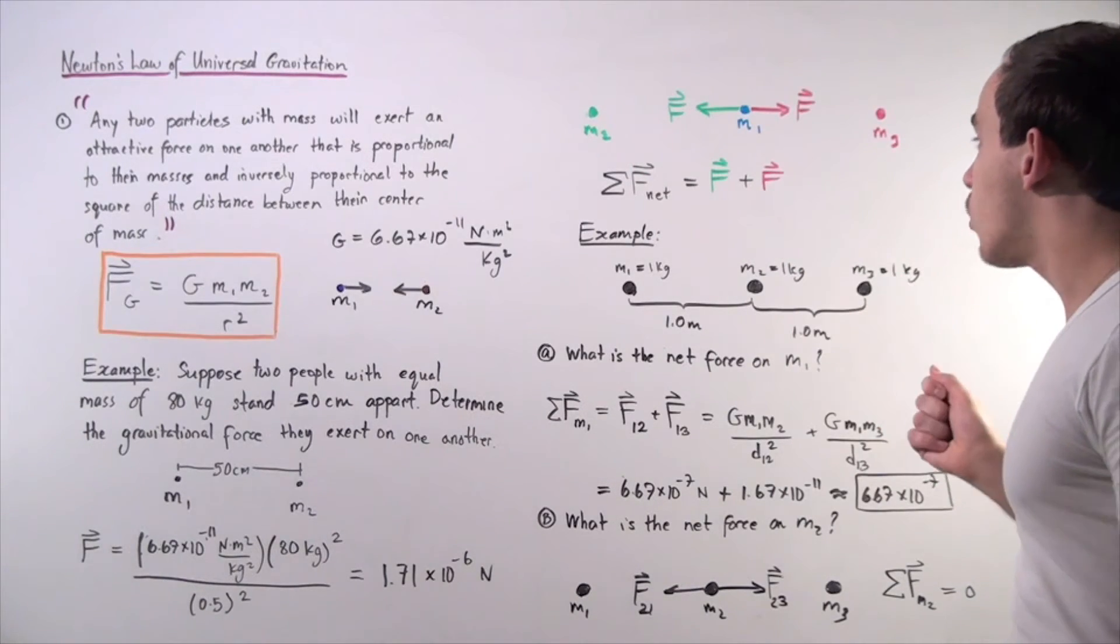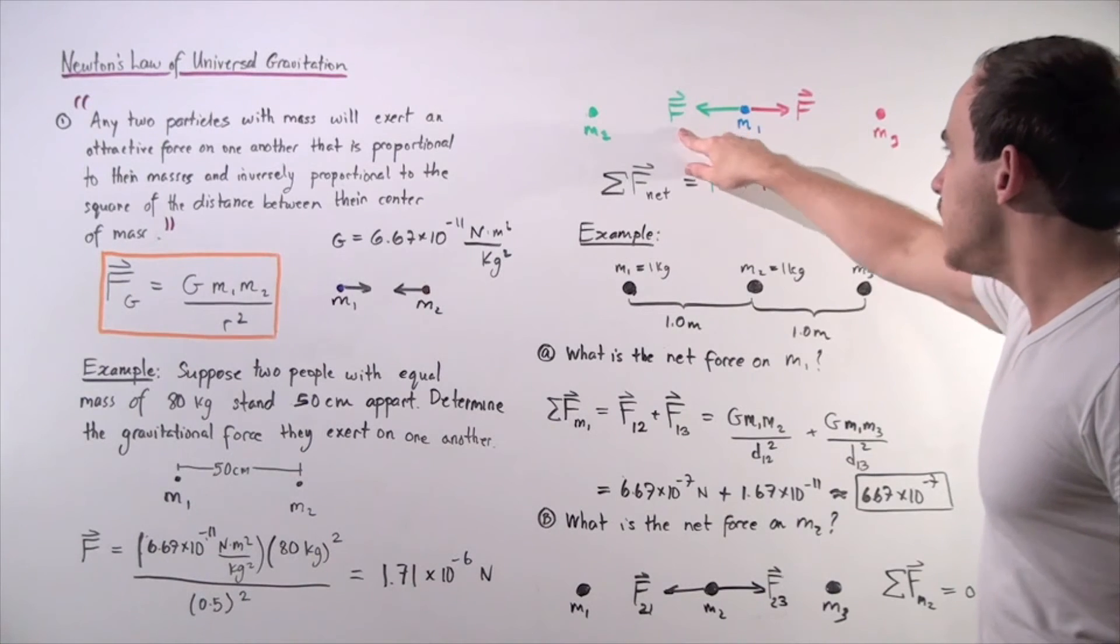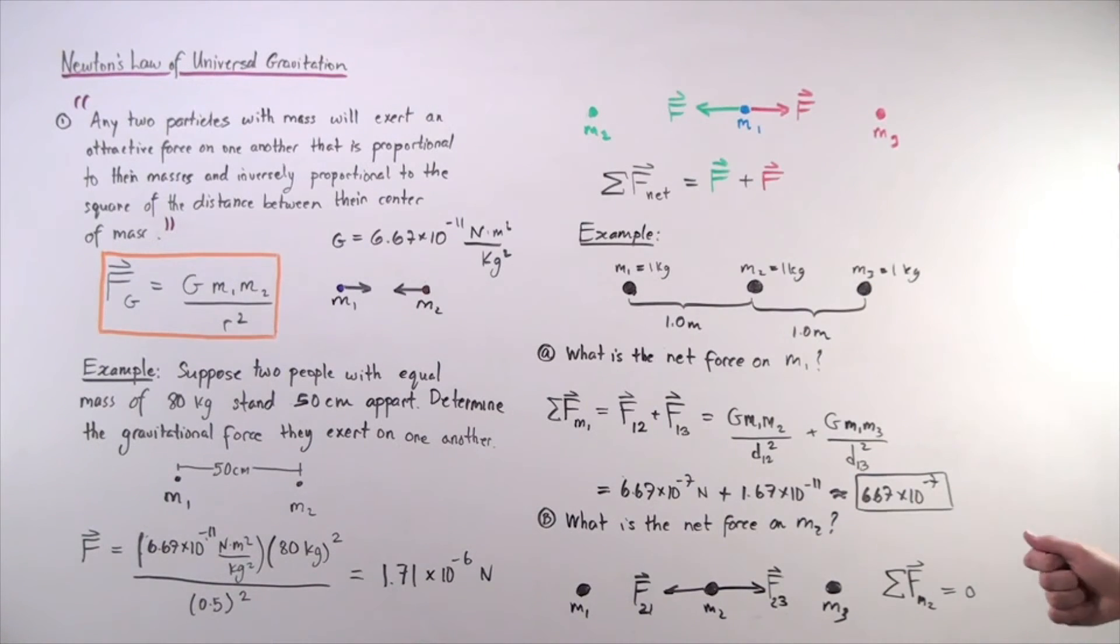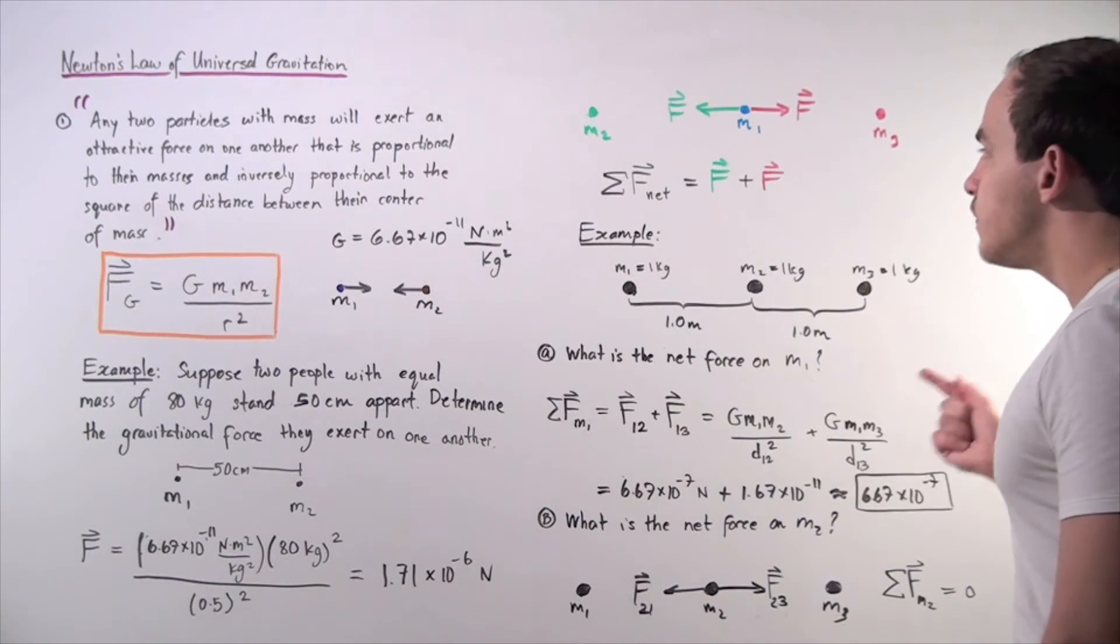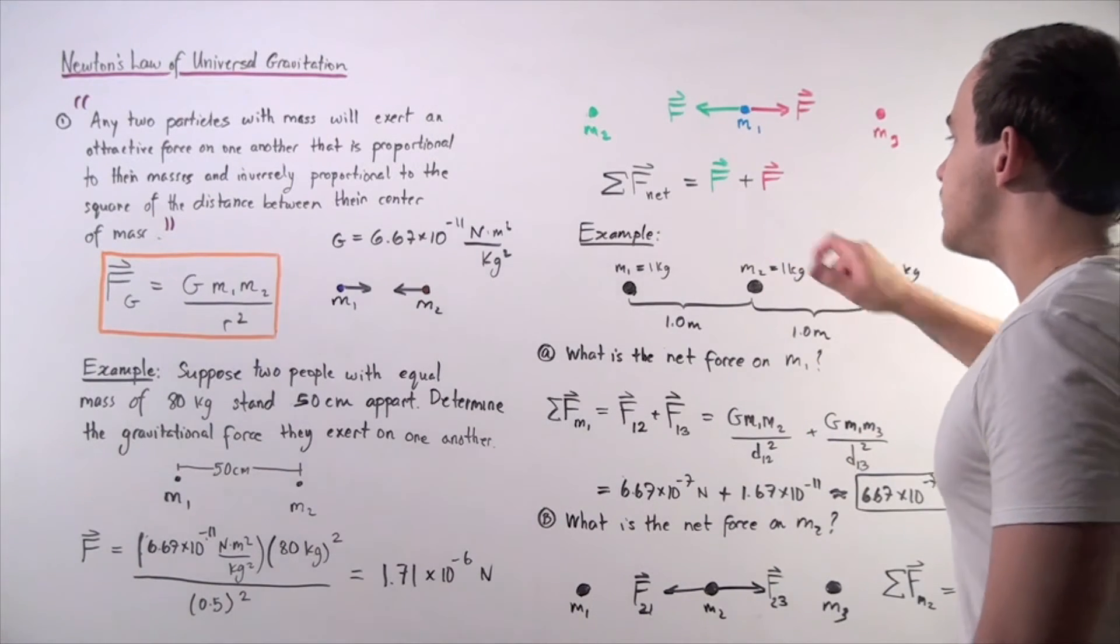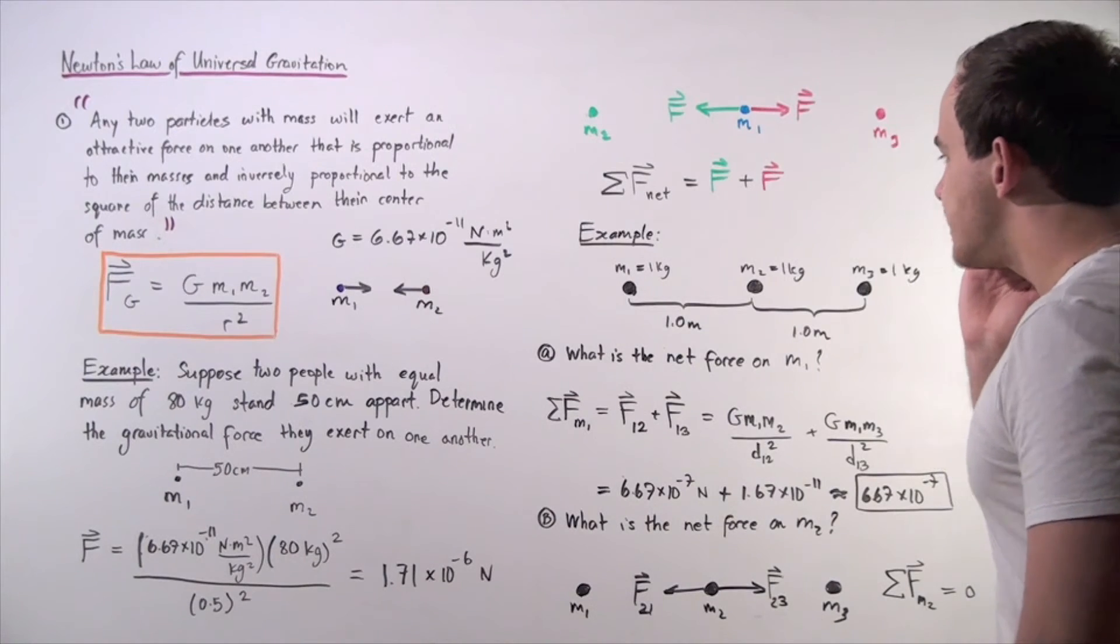One force is acting due to mass two, shown in green, and the second force is acting due to mass three, shown in red. So to find the sum of the forces, I simply add up my two forces. Let's look at another example.